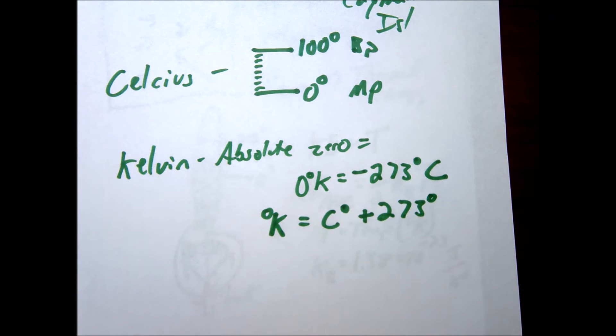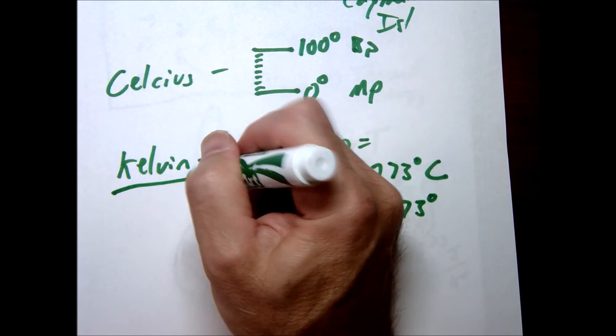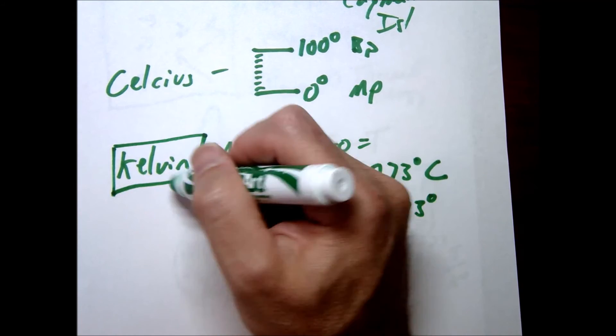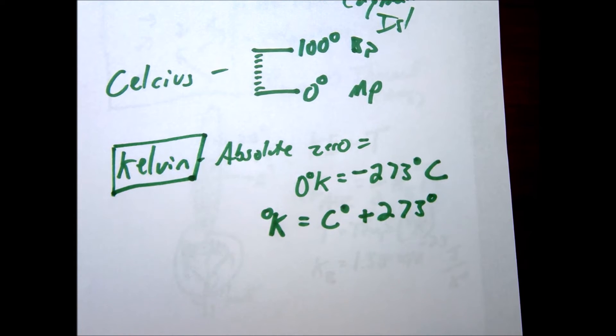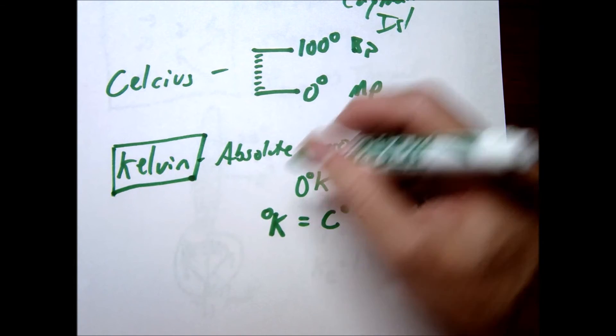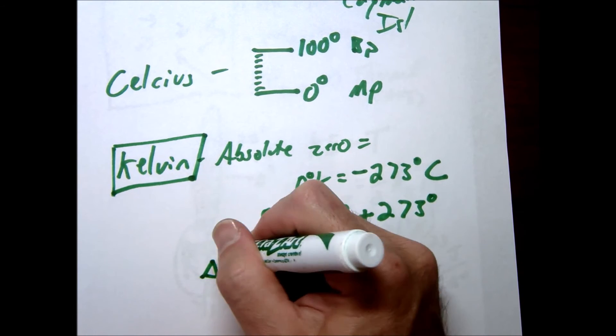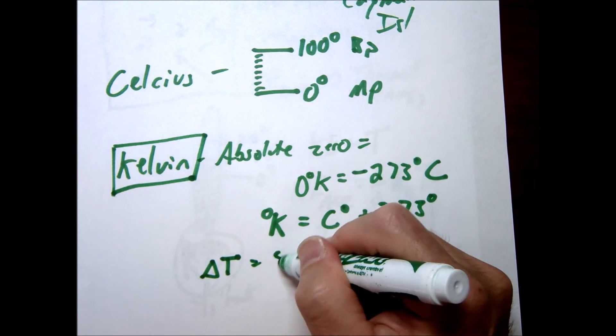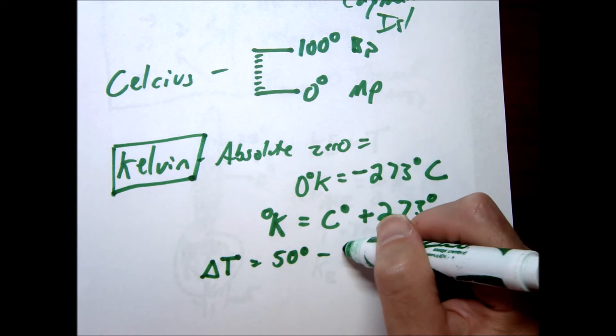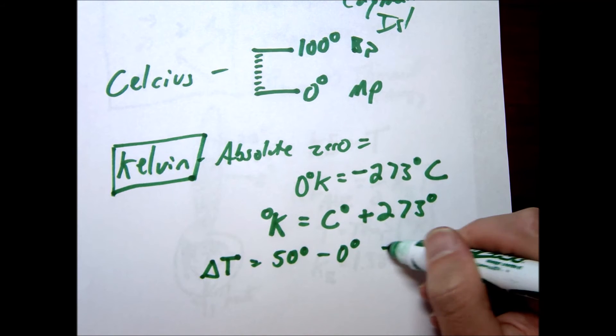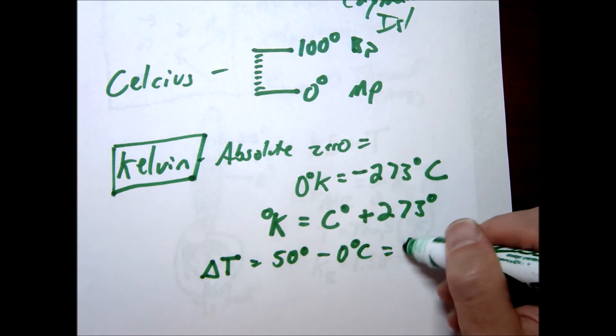In general, we're going to be using the kelvin scale. So whenever you do your calculations, you're going to be using the kelvin scale. Now the only time you can really use Celsius is when you have a delta. So if you have a delta T, like you're comparing two temperatures, 50 degrees and zero degrees for example, the delta here if this was Celsius would be 50 degrees.